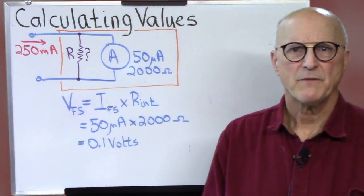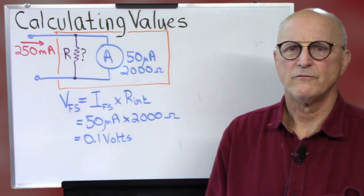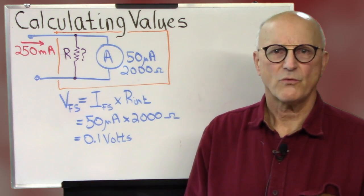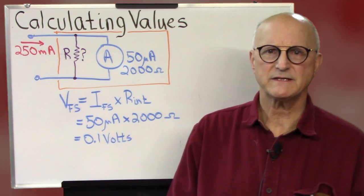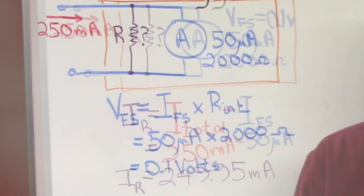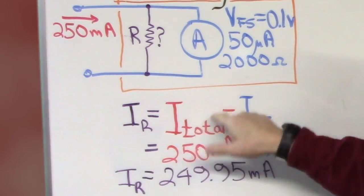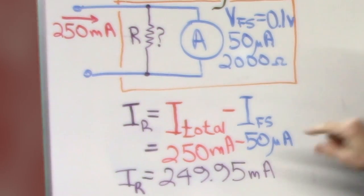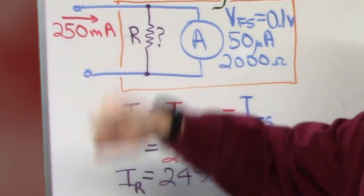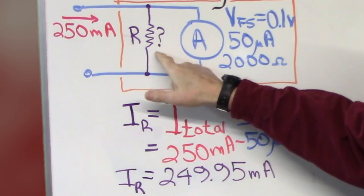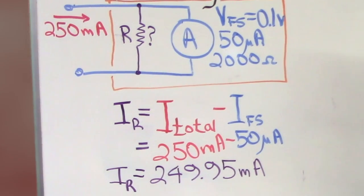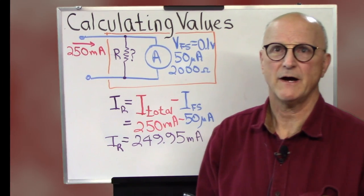So with this meter we will have 0.1 volts across it when 50 microamps is running through it. Next we calculate the current running through this parallel resistor. And this will be the total current of our box minus the full scale current of our meter which is 250 milliamps minus 50 microamps. So the current through our shunt resistor needs to be 249.95 milliamps or 0.24995 amps.